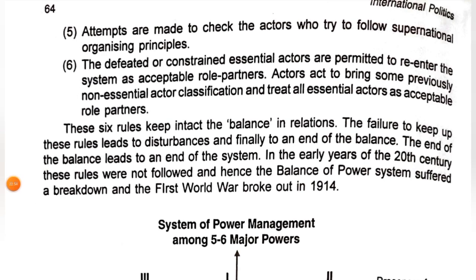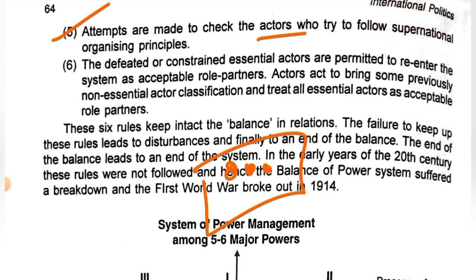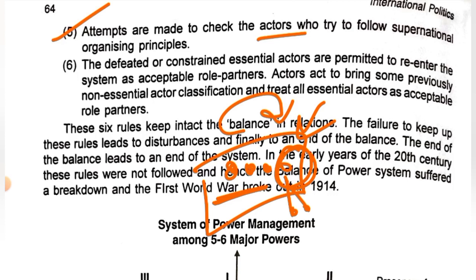The fifth rule is: attempts are made to check the actor who tries to follow a supernatural organizing principle. If any nation or actor is trying to form more alliances to gain dominance above all others, you must stop it. If three more small nations join one side, that side becomes too powerful and the balance of power shifts dangerously.